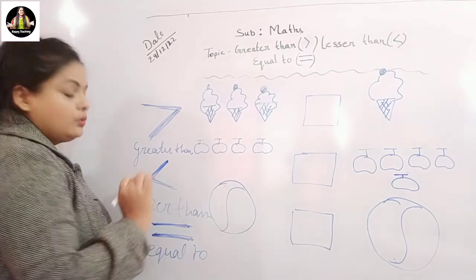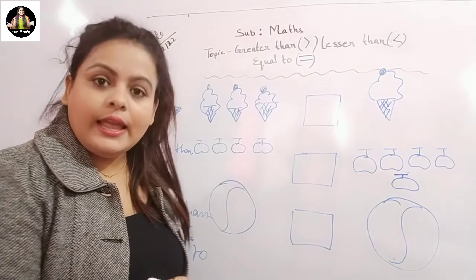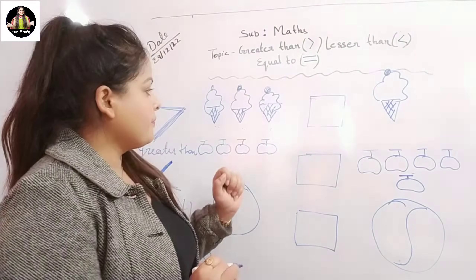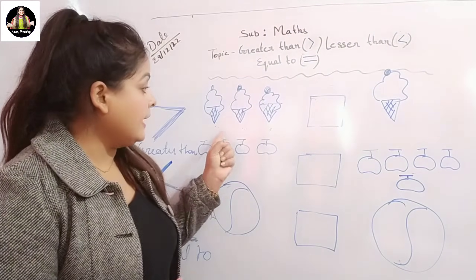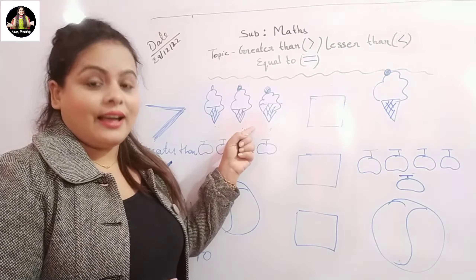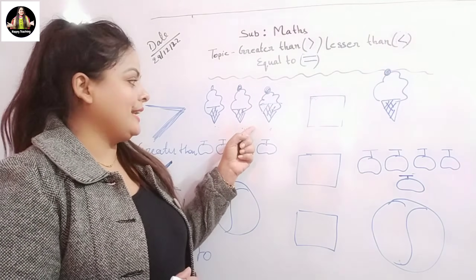This is the equal to sign. Now let's see the examples. See here — what is this? Ice cream! Correct. So how many ice creams do we have here? Let's count.